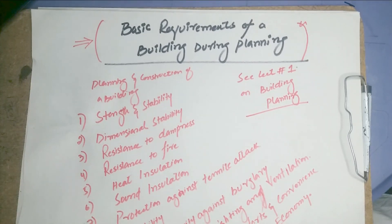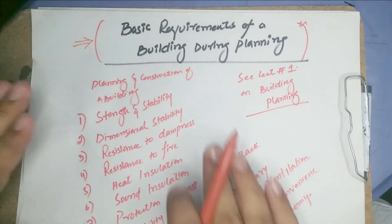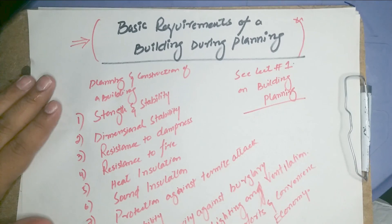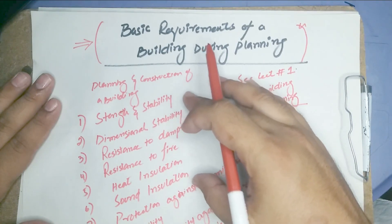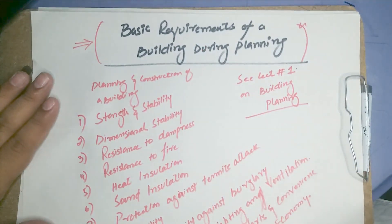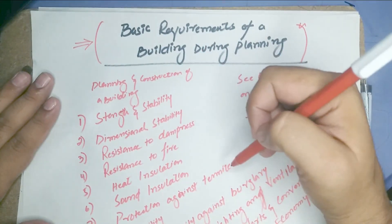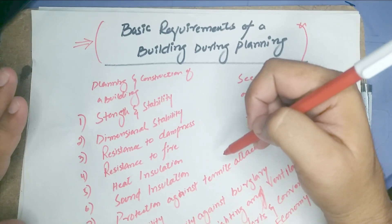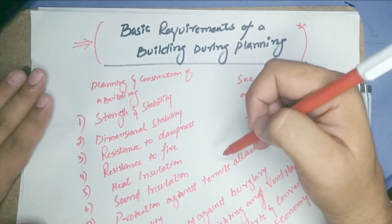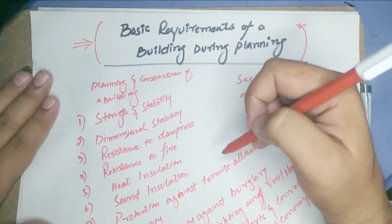So these are the 12 basic requirements during the planning stage. Let's suppose I am going to construct a building — I will encounter all these requirements during the planning stage, before construction of a building.